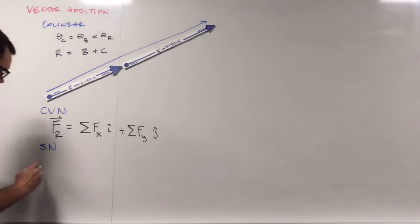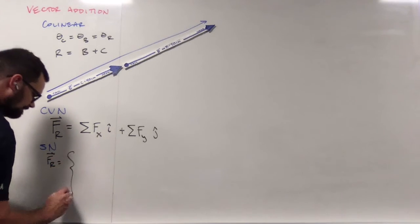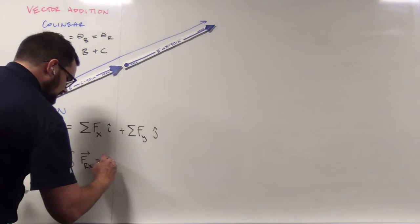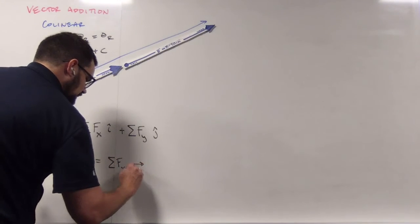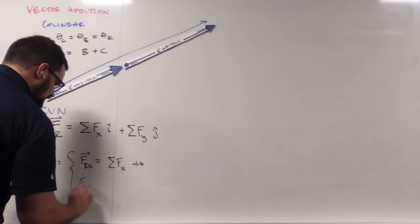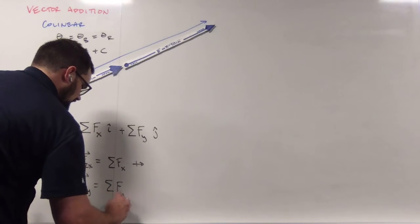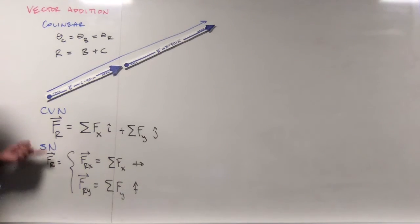If we were to do this in scalar notation, remember our resultant force is going to have two components. The resultant force component in the x direction, or the sum of the forces in the x with an arrow in the x direction, and the resultant force component in the y direction, so sum of the forces in the y direction with an arrow. And these communicate exactly the same ideas.